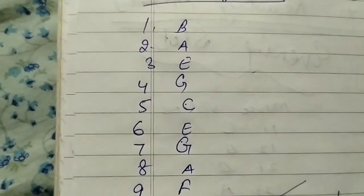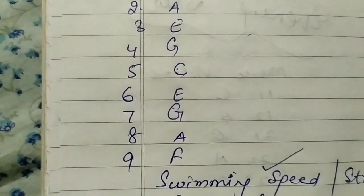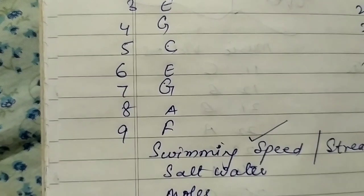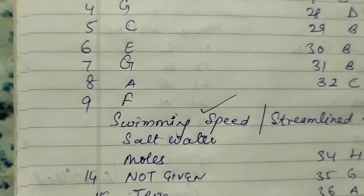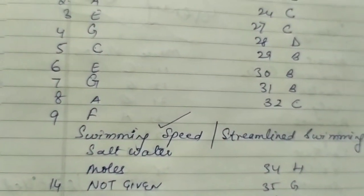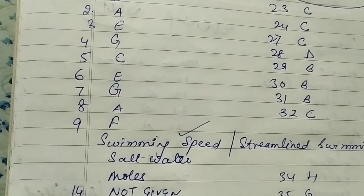First is B, second is A, third is E, fourth is G, fifth is C, sixth E, seventh G, eighth A, and ninth F. Next is swimming speed and streamlined swimming. Students bol rahe hai but zyada tar swimming speed ka hi answer correct hai.